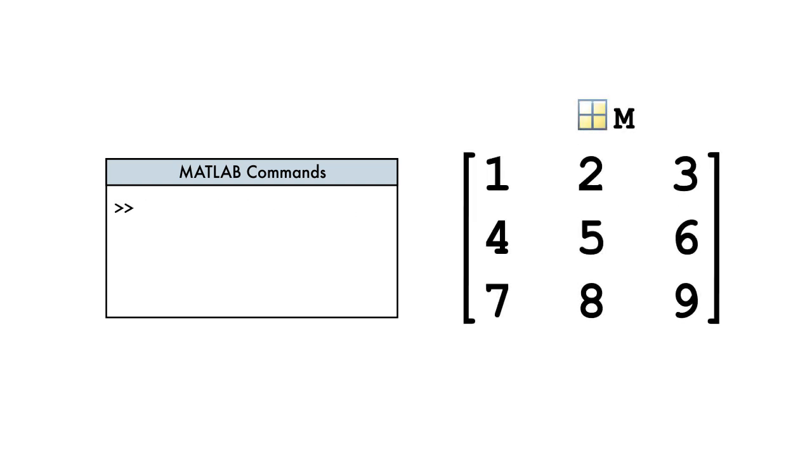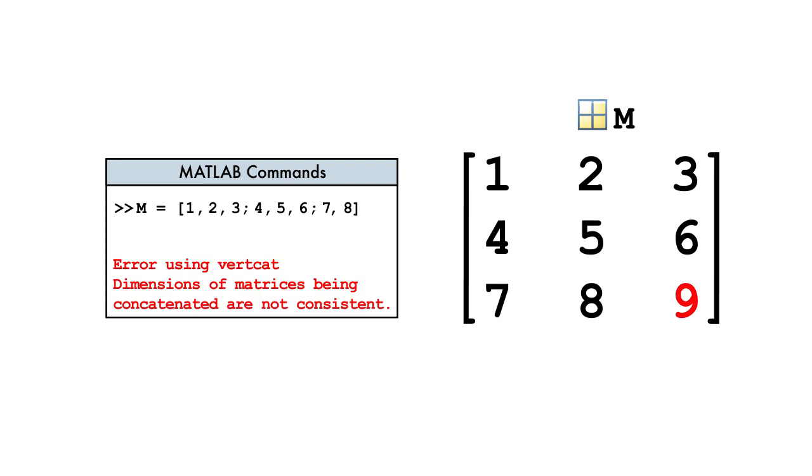When typing in numbers by hand, it's easy to make a mistake and accidentally put too many or too few elements in a row of the matrix. This results in a concatenation error message.